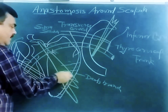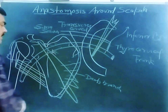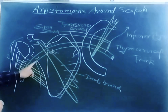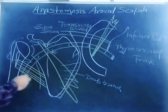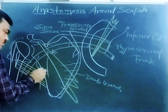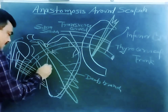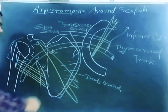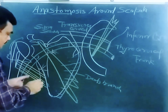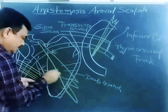The branches supply both the anterior and posterior aspects of the scapula. The subscapular artery gives off the circumflex scapular artery, which gives branches towards the dorsal aspect and towards the ventral aspect, supplying both sides.